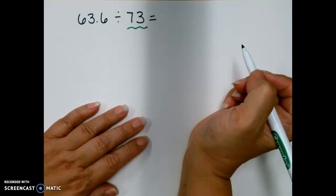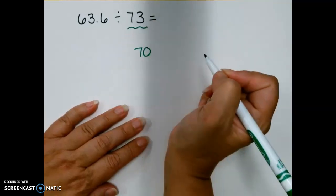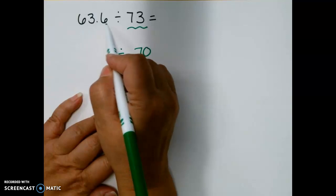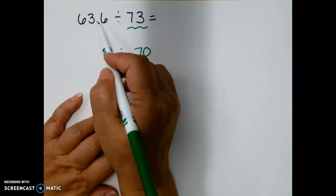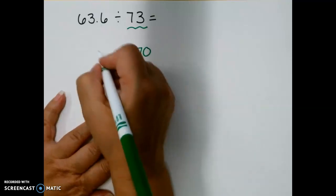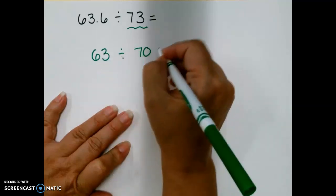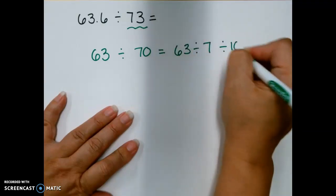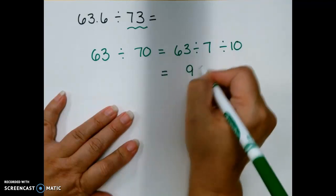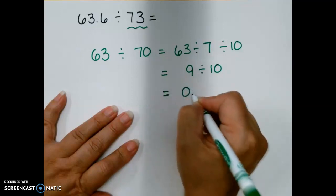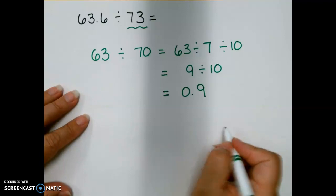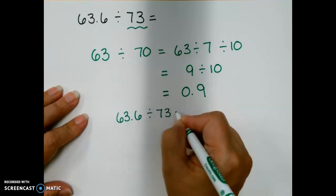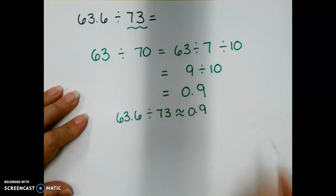So to get started, let's round our divisor first. 73 is close to 70. Now, I can keep part of my number here. I know that 63 is a multiple of 7. So if I round this to 63, I can say 63 divided by 7 divided by 10, which is equal to 9 divided by 10, which is equal to 9 tenths. So 63.6 divided by 73 is about 9 tenths.